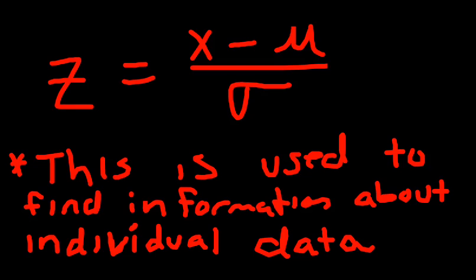Okay, so don't get this confused with the z-score we've been using. The z-score we've been using up to this point is z equals x minus mu over sigma, where x is a single individual data point, not a sample of data points. Mu is your population mean, like normal, and sigma is the standard deviation of the population. So, this is only used to find information about individual data. So, you've got to be really careful that you don't get these confused.